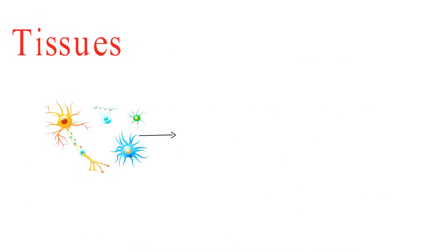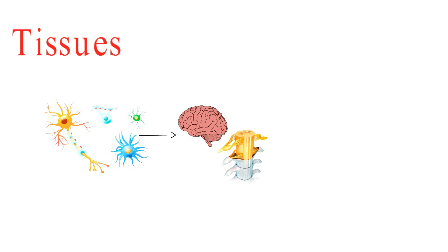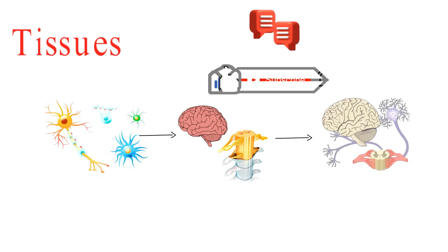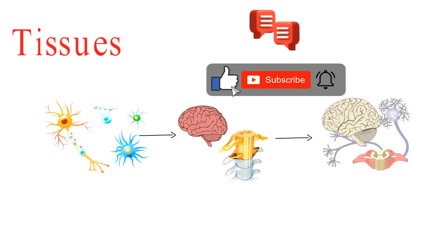These four types of tissues come together to form our organs, which, in turn, team up in organ systems to keep our bodies running smoothly. Pretty amazing, right? I hope you enjoyed this video. If you have any questions, please leave a comment below. Don't forget to like and subscribe to my channel, and press the bell icon for more videos about science and biology. Thank you.